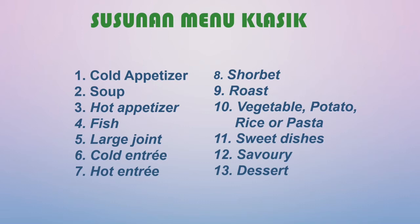Selanjutnya ada hot appetizer atau warm appetizer, yaitu hidangan pembuka panas dengan rasa gurih dan asam, dihidangkan dengan suhu 50 sampai 75 derajat Celsius dalam porsi kecil kurang lebih 80 gram. Selanjutnya ada fish, yaitu hidangan dari hasil laut seperti ikan, udang, kepiting, dan kerang. Kemudian ada large joint, dibuat dari daging atau ayam yang dimasak tidak dengan dipanggang, dalam potongan besar dan utuh.